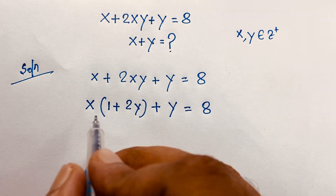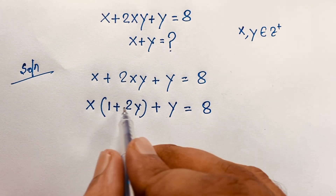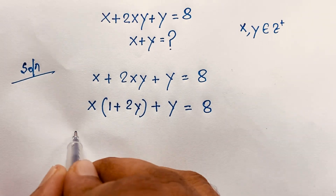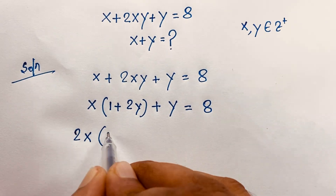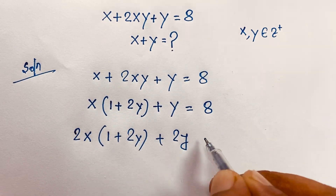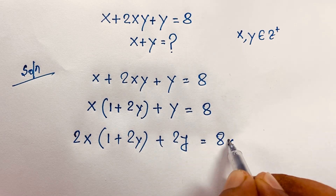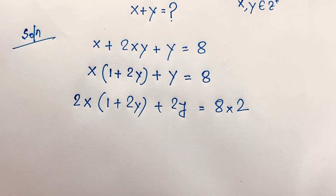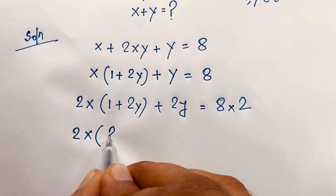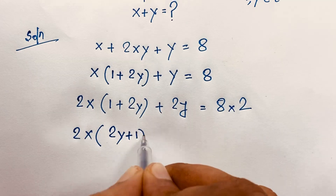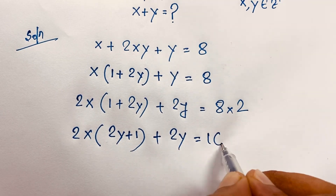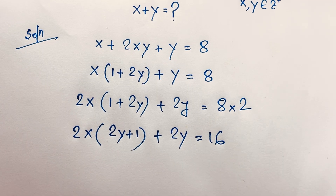Now you can see easily here y, this is 1 plus 2y. So I multiply both sides by 2. It will be 2x times (1 plus 2y), plus 2y, is equal to 8 times 2. I multiply both sides by 2. This expression will be 2x times (2y plus 1), plus 2y, is equal to 16. 2 times 8 is 16.